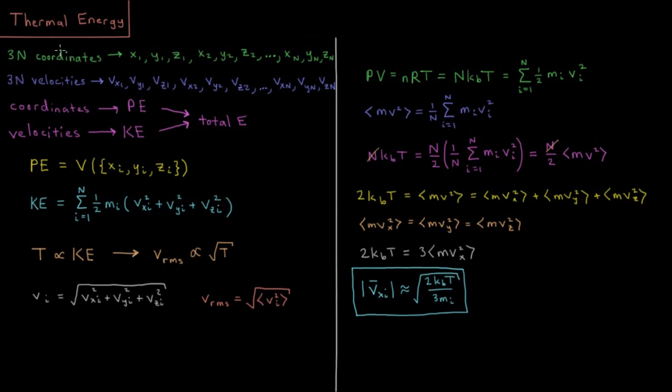As we've seen thus far in this playlist, there are going to be n atoms in our system, and each of them has an x, y, and a z coordinate. So overall we have three n coordinates. So our system is 3n dimensional, and we have what's called a 3n dimensional potential energy function.